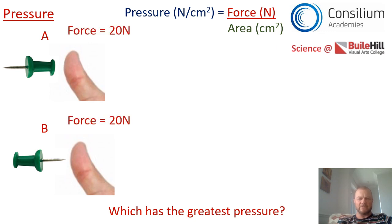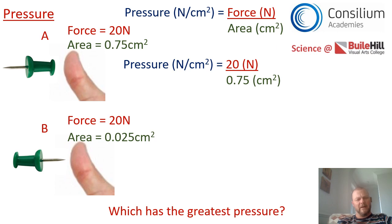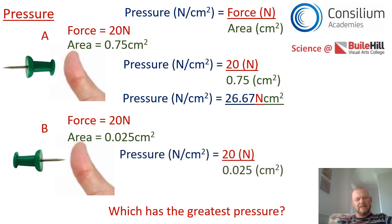Let's put some numbers to it. We're pushing with the same force, 20 newtons, and the area on top example is 0.75 centimetres squared and the area on the bottom example is much smaller, 0.025 centimetres squared. On example A it would be force which is 20 divided by the area 0.75 which would give us a pressure of 26.67 newton centimetres squared. In the second example we're going to have 20 divided by 0.025, and if we put that into a calculator we get an answer of 800 which is much much bigger. That proves that situation B has a much bigger pressure and that's why the pin would go into your finger and why it hurts.